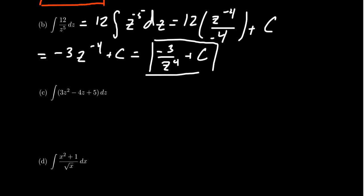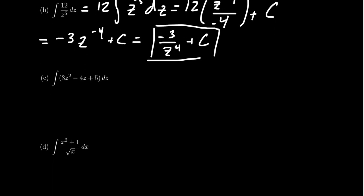How about a polynomial? What do you do with a polynomial like this? Well, because of the sum rule, because of the sum and difference rule, you can break this up into three separate integrals. We get the integral of three Z squared dZ, don't forget the differential, minus the integral of four Z dZ, and then plus the integral of five dZ.